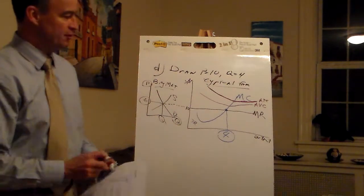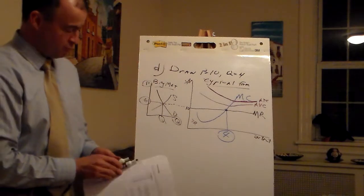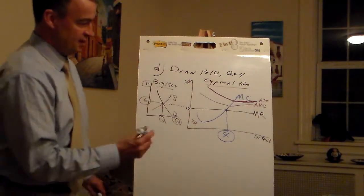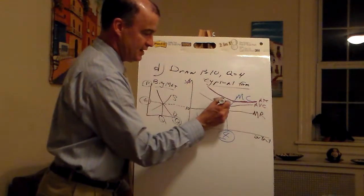Average total is above average variable, but they're both above the price, which means when we're trying to identify those values at four, we have to go from this point and straight up.